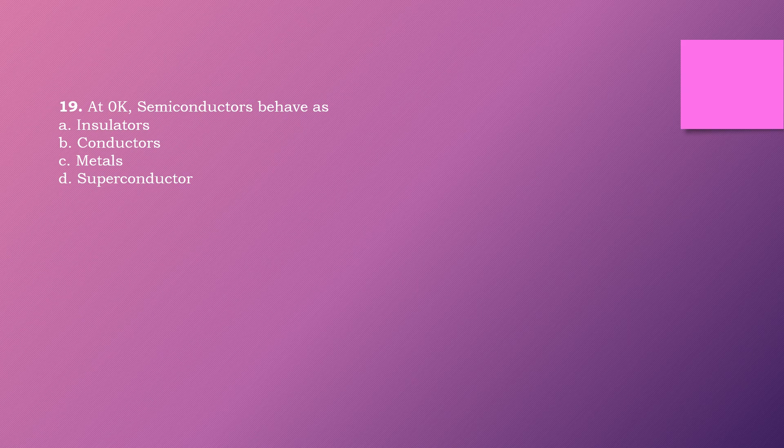Question nineteen: At zero Kelvin, a semiconductor behaves as dash. Options are: insulator, conductor, metal, superconductor. The right answer is option A: insulator.